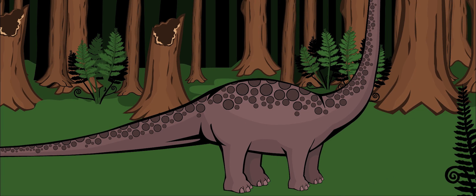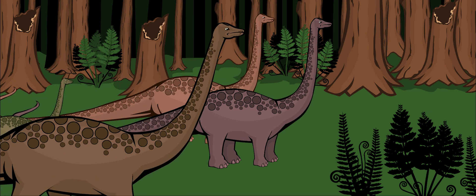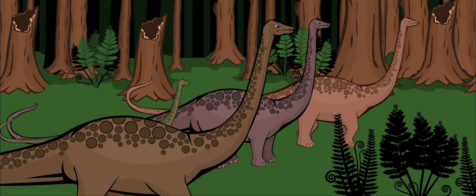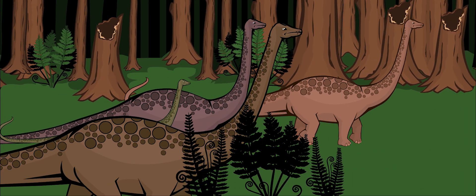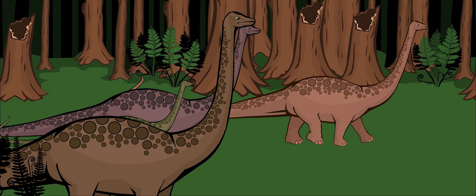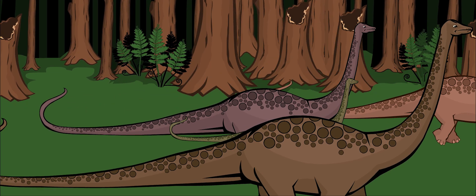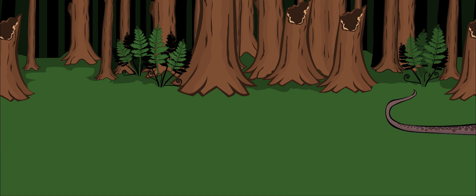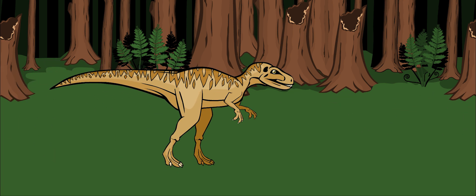Diplodocus may have moved from place to place in large groups or herds. When a group had eaten all the food in one area, they would migrate or travel to another place. When they were on the move, the larger, stronger adults walked along the outside. The young stayed in the center of the herd. This was done to protect them against predators.